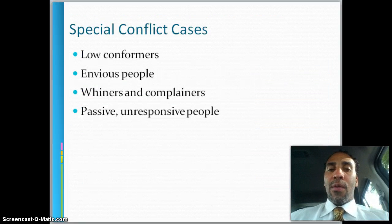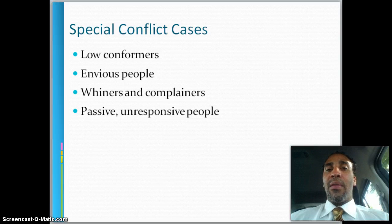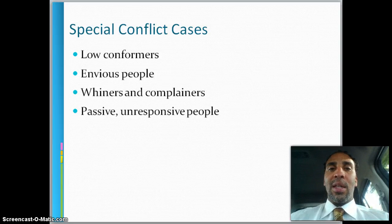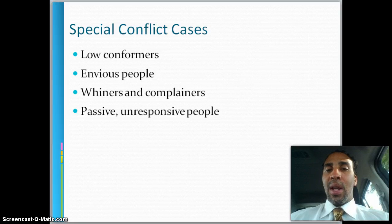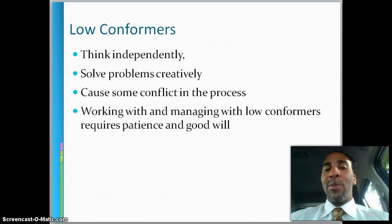Special conflict cases include low conformers, envious people, whiners and complainers, and passive and unresponsive people. Low conformers think independently and solve problems creatively — they cause some conflict in the process, but that's not always bad. Working with them requires patience and goodwill. To make low conformers less problematic: learn to tolerate their honesty, accept their firm self-expression without labeling it as stubbornness or disloyalty, support them when others are overly critical, and accept their independence.